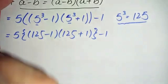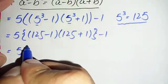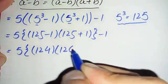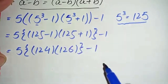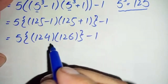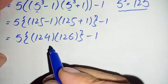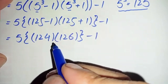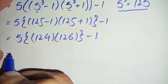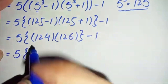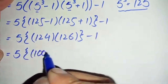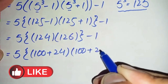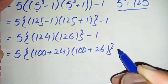Simplifying these two numbers: this becomes 5 times 124 times 126, minus 1. We will try to multiply these two numbers. Rather than simple multiplication, we can change these two numbers to easier sums: 124 can be written as 100 plus 24, and similarly 126 can be written as 100 plus 26.